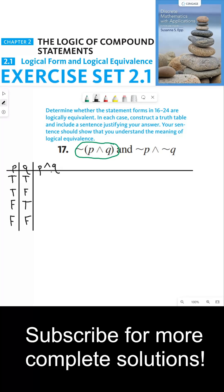Here I'm going to write P∧Q and fill in this column in the truth table. If P is true and Q is true, then P∧Q must also be true. If P is true and Q is false, then P∧Q is false because Q is false. If P is false and Q is true, then P∧Q is false. And if P and Q are both false, then P∧Q is also false.